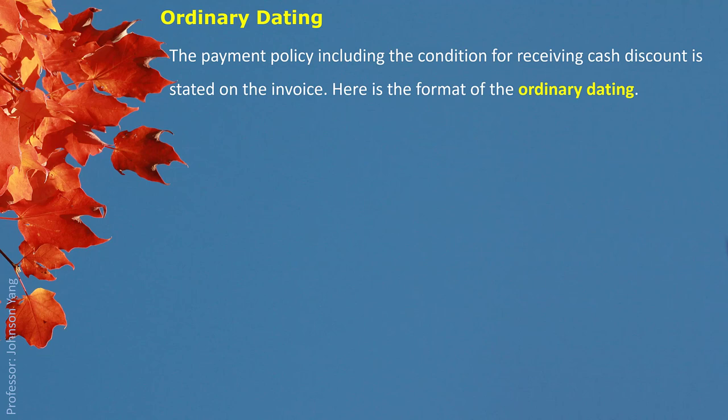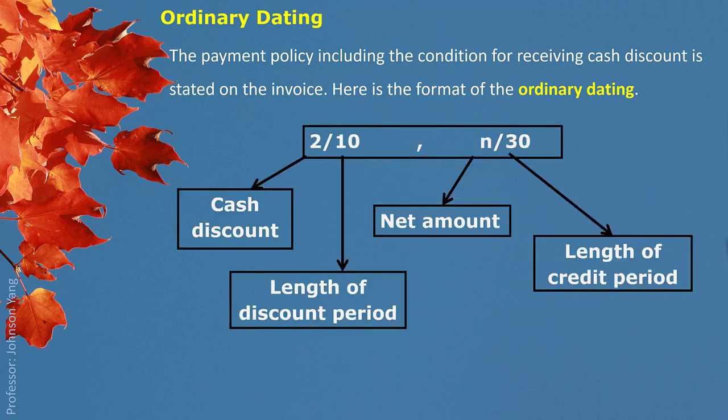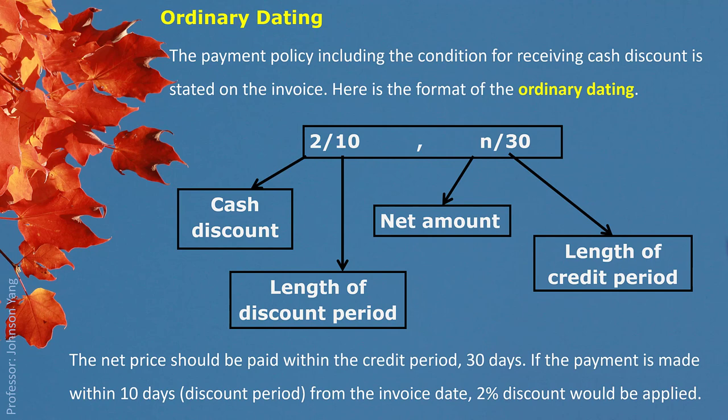This kind of cash discount offer is stated on the invoice and shown as ordinary dating. The payment policy, including the condition for receiving the cash discount, is stated on the invoice. Here's the format: 2/10 means if the payment is done within 10 days from the invoice date, then the cash discount would be applied. N30 means the net price must be paid within 30 days. N represents net price and 30 represents the length of the credit period.